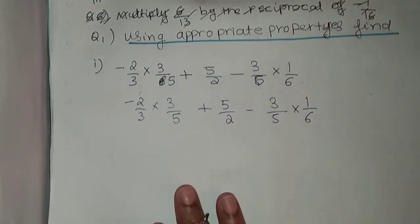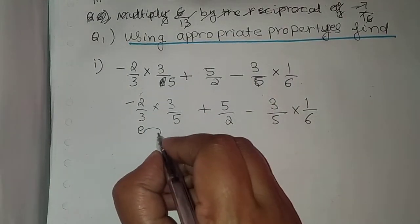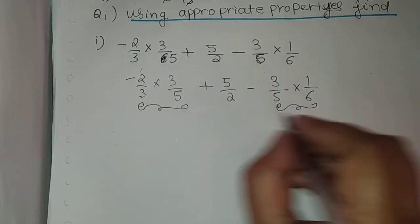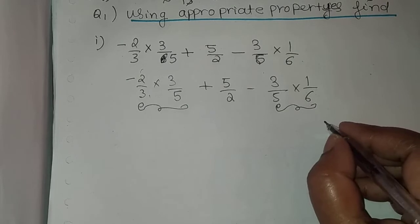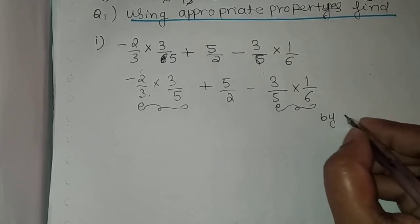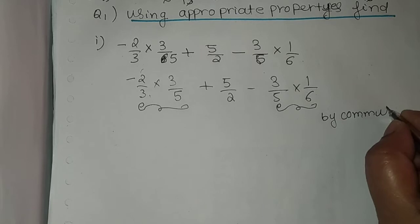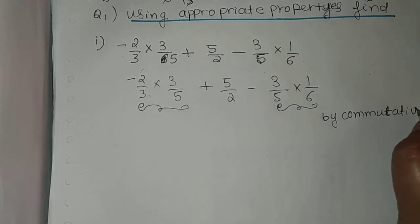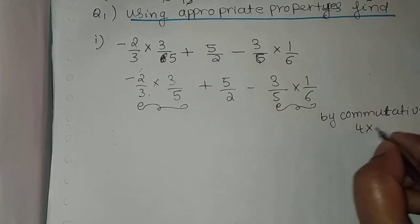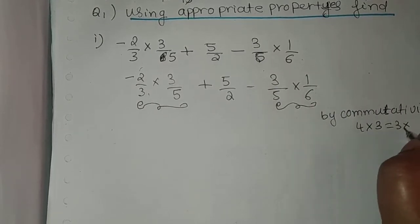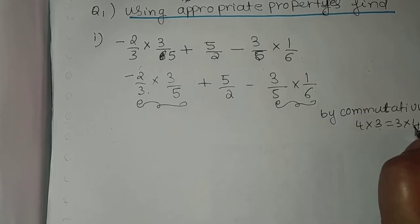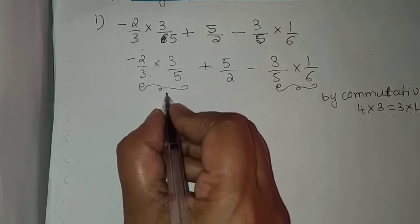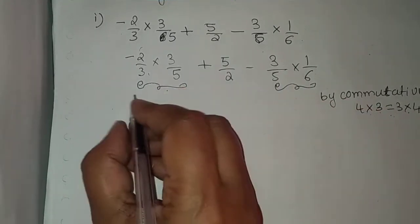We consider these two terms and use commutativity — that is, 4 × 3 equals 3 × 4. If we interchange the elements, both are equal and the answer remains the same. Now we interchange and write this using the commutative property here.